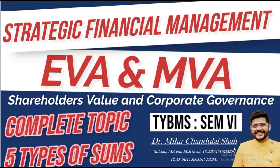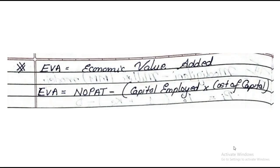First, let us note down the formula for EVA. EVA stands for Economic Value Added. The formula for EVA is: Net Operating Profit After Tax minus Capital Employed into Cost of Capital. No matter what type of sum is asked, this is the final formula for calculating EVA. There will be different ways to calculate the individual values, but they will all be incorporated into this single formula.